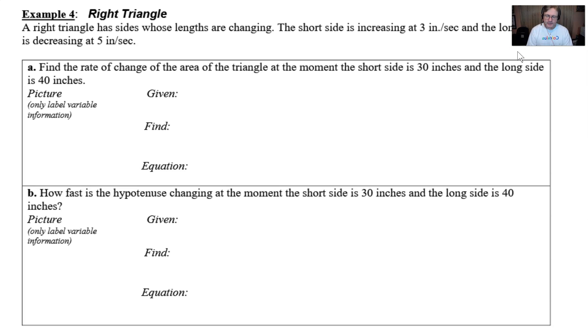We've got two parts. Part A says let's find the rate of change of the area of the triangle at the moment that the short side is 30 and the long side is 40. I like to scaffold these problems with picture, given, find, an equation model. As far as the picture is concerned, drawing in a picture can be very helpful. You can imagine that you've got a triangle here that's got a shorter side and a longer side.